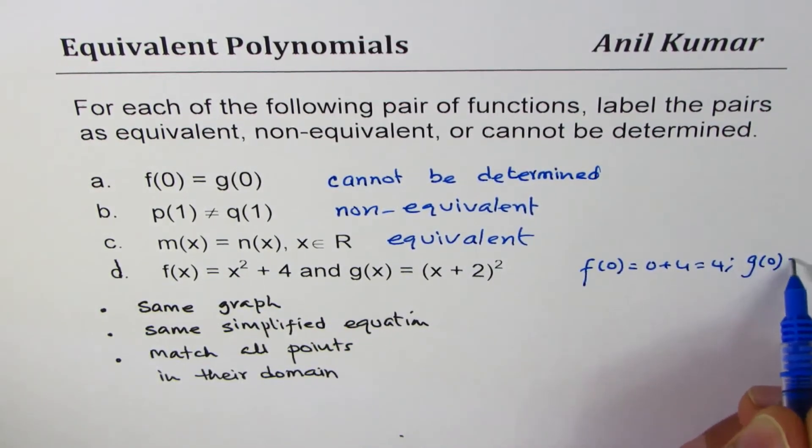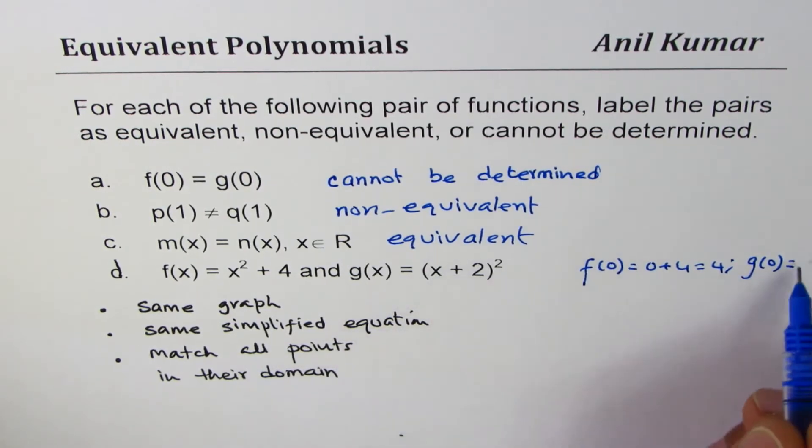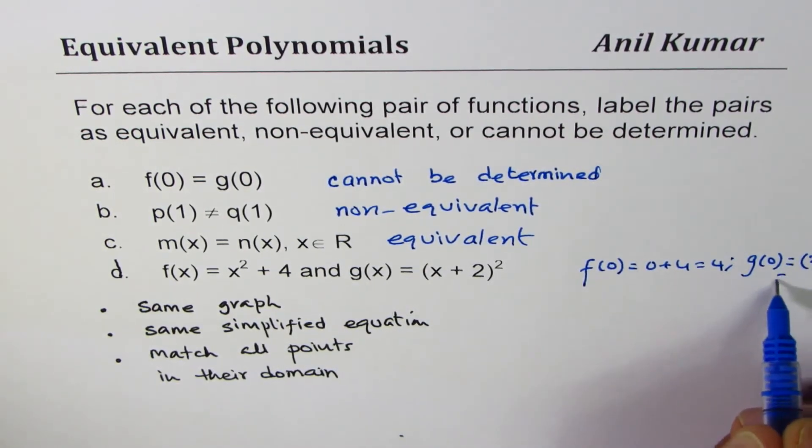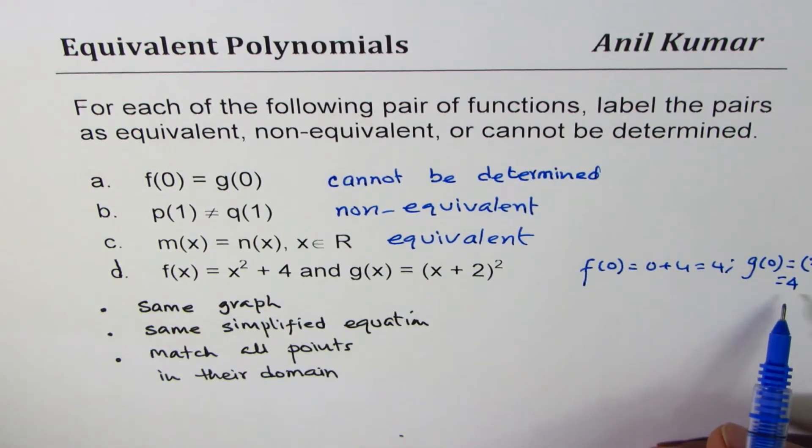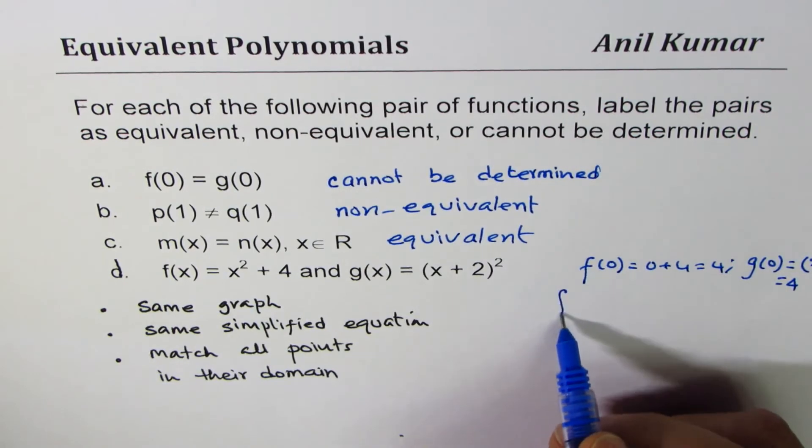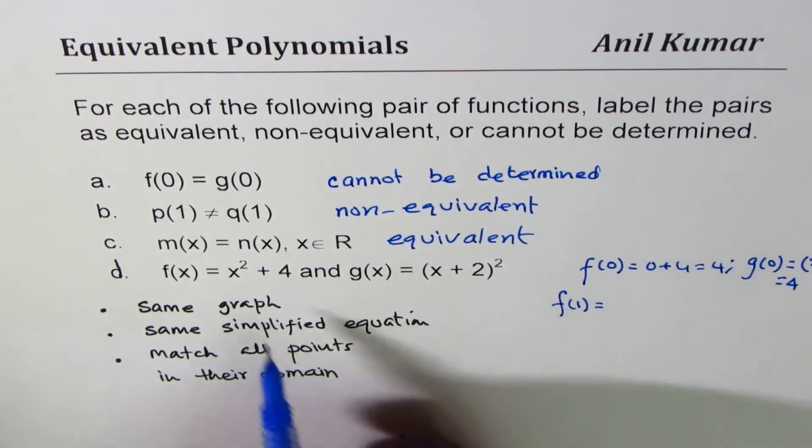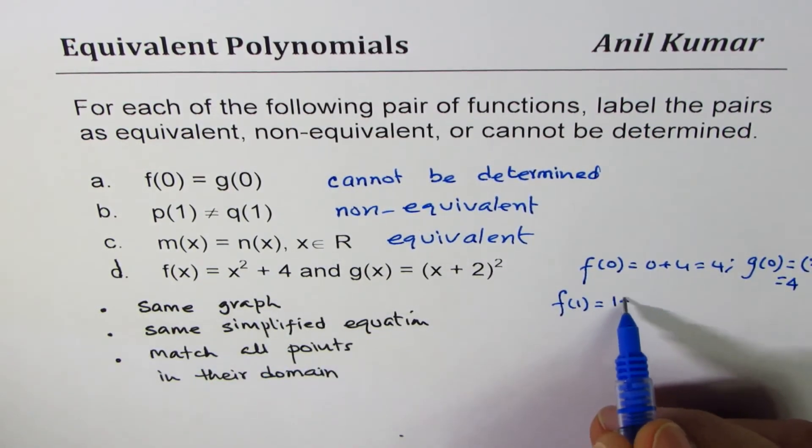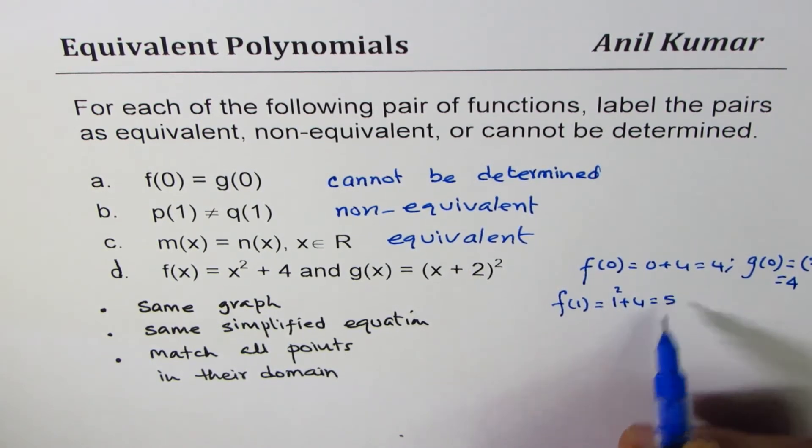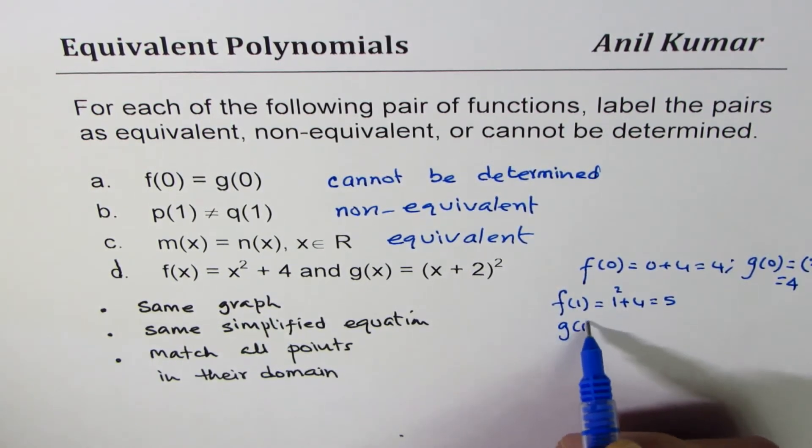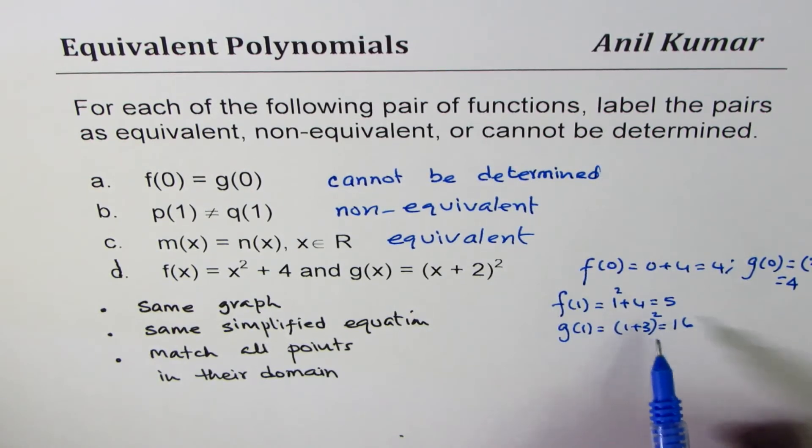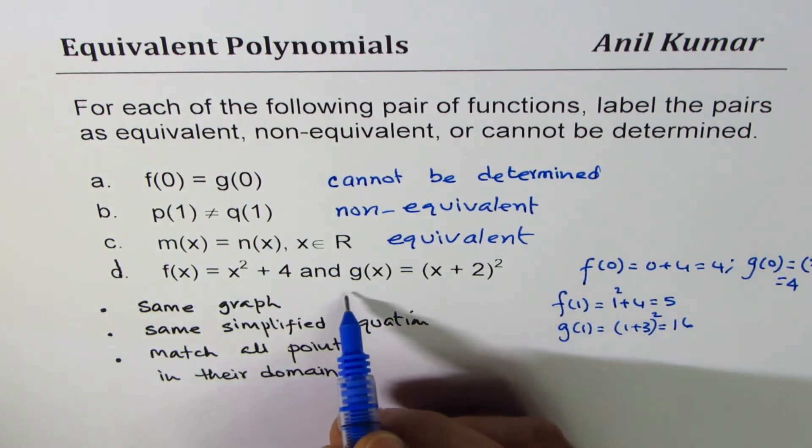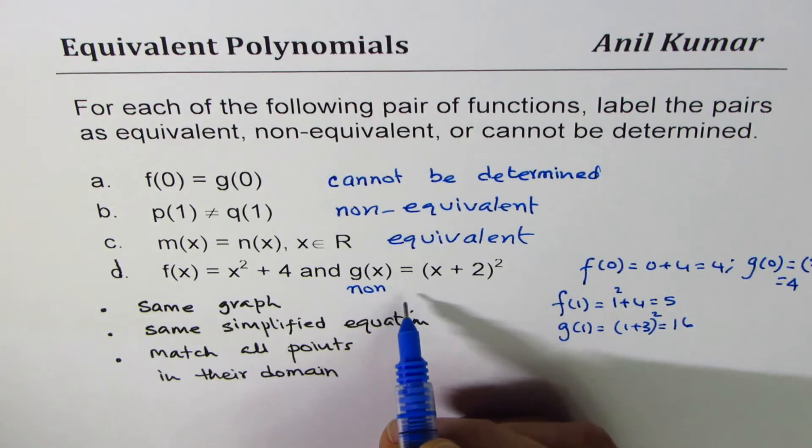So we found that one point is exactly same. However, if I find the value at 1, then I get 1 plus 4, which is 5. However, g(1) is 1 plus 2, which is 3 whole squared, which is 9. So definitely they are not equivalent. So let me write down here non-equivalent or not equivalent.